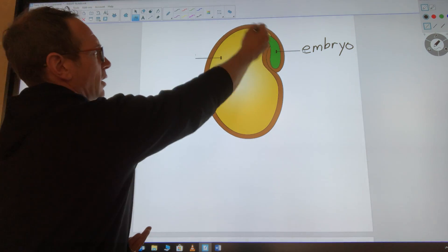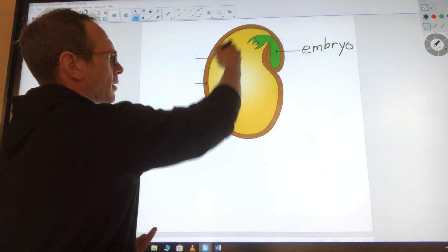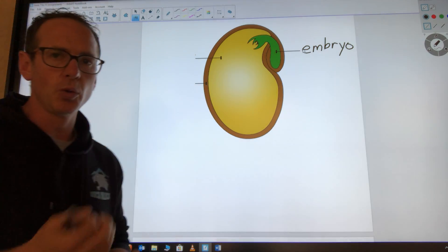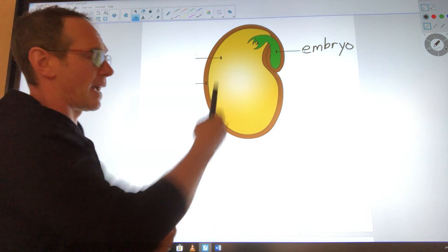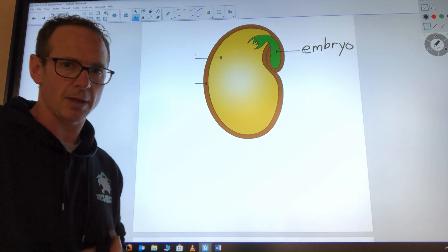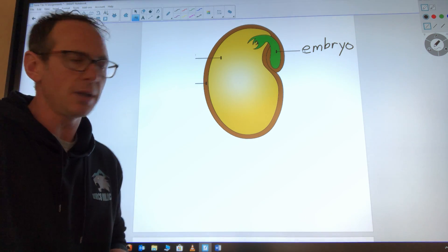The next part we're going to look at is inside, all the main part of the seed. That's the food source for this baby plant. Since it doesn't have any roots or leaves or anything like that, it needs some food.